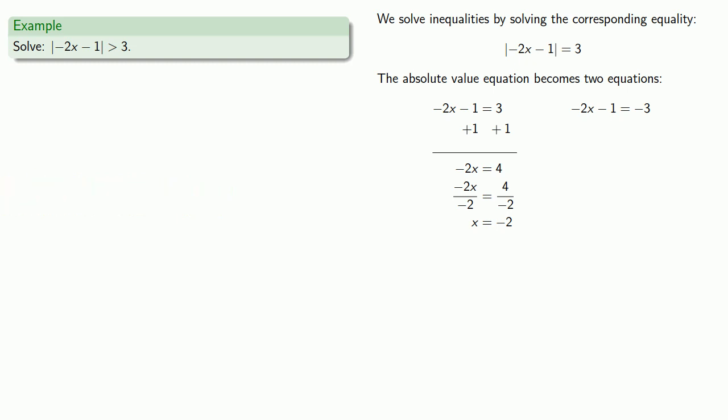The second equation we can solve in the same way: minus 2x minus 1 equals negative 3. We have a subtraction on the left hand side, so we add plus 1 to get rid of the subtraction. Once again, we have a product on the left hand side, minus 2 times x, so to get rid of a product, we'll divide. We get our solution x equals 1, which tells us the critical values are x equals minus 2 and x equals 1.